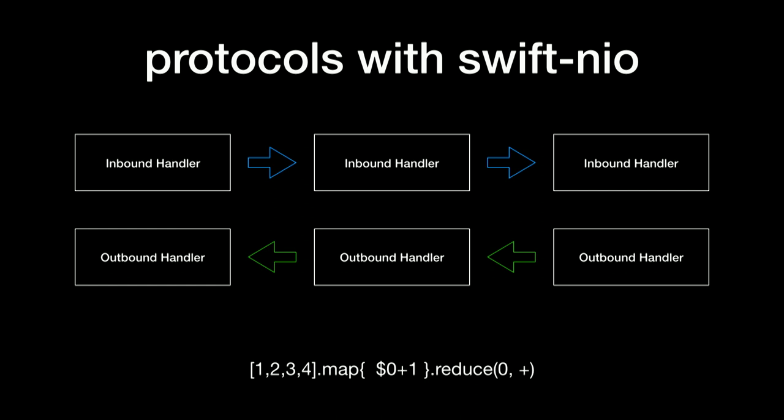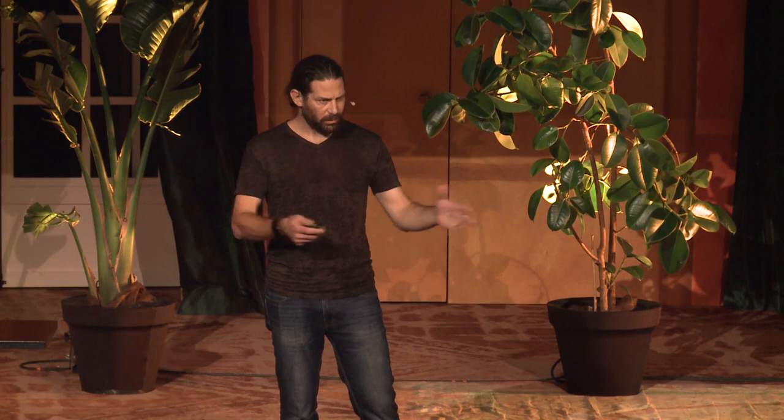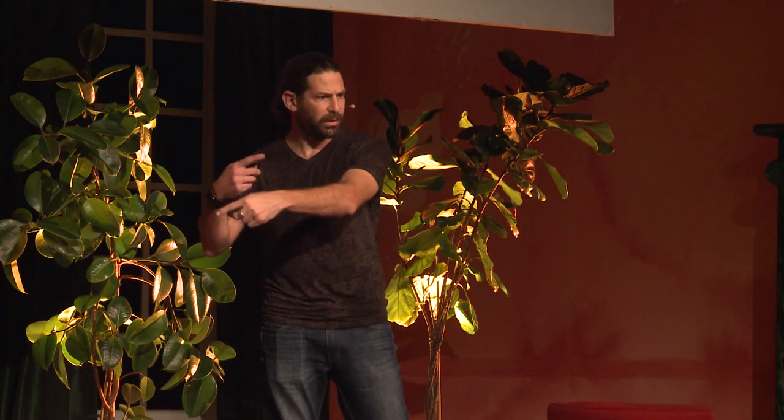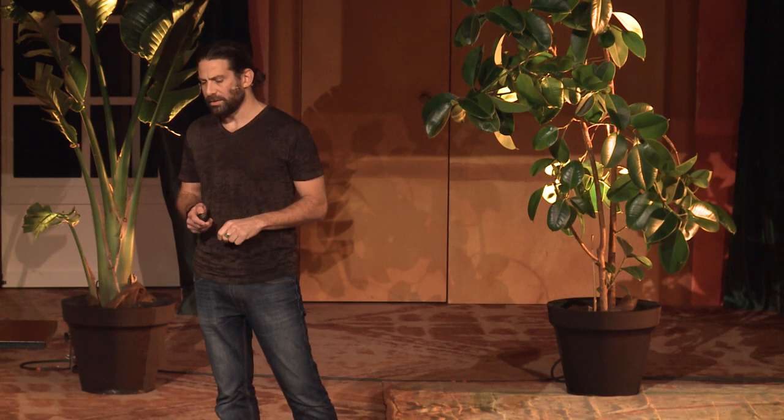So the key abstraction in Swift NIO is these handlers. There's a concept of a channel that represents a connection, and then we have inbound and outbound handlers. If you've ever done something like a map on an array, it kind of feels the same way but at a bigger scale. We get bytes on the network and start transforming them from one handler to the next, and when we write back we do the same. This allows us to think in small components about what kind of processing we want to do.